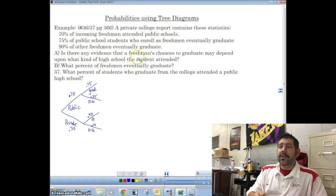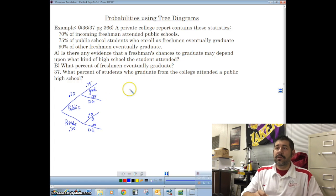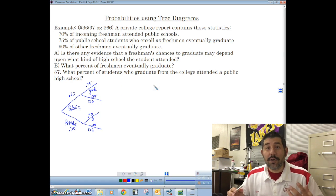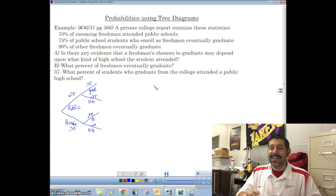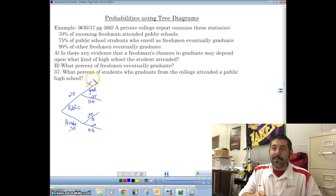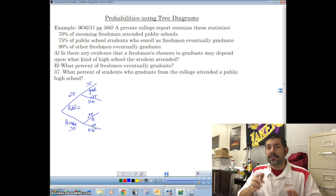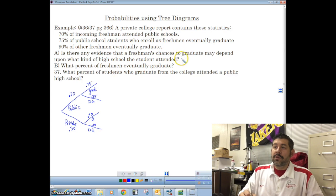The first question is, is there any evidence that a freshman chances to graduate may depend upon what kind of high school? Well, of course there is. That's the point of drawing a tree diagram, is that there is some sort of dependence going on. In fact, 75% of students that graduate, only 75% of the public school students graduate, whereas 90% of the private school students graduate, which means that there is definitely some dependence upon what school you came from.